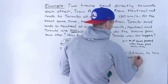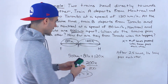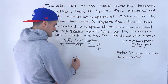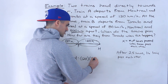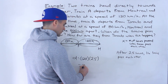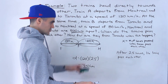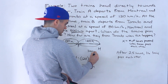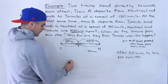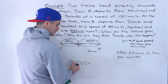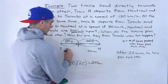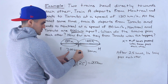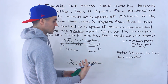You can actually test this intuitively. If train A is going at 120 kilometers per hour and it travels for two and a half hours, the distance is 120 times 2.5, which gives us 300 kilometers. Train B is traveling at 80 kilometers per hour for two and a half hours, so it covers 80 times 2.5, which is 200 kilometers. Notice that 300 plus 200 adds up to 500 kilometers — so it makes intuitive sense.